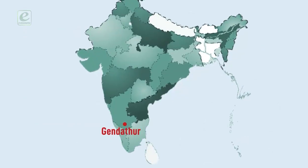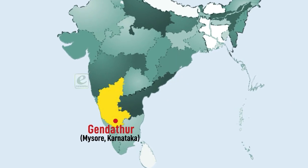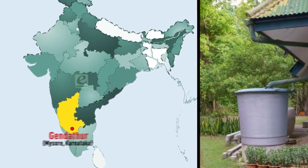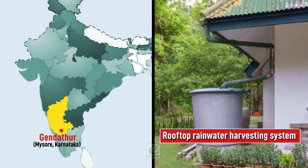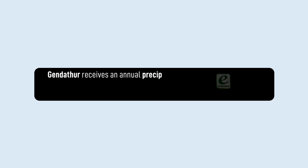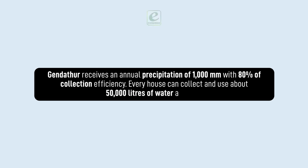In Gendathur, a remote backward village in Mysore, Karnataka, villagers have installed rooftop rainwater harvesting systems in their households. Gendathur receives an annual precipitation of 1000 mm with 80% collection efficiency, meaning every house can collect and use about 50,000 litres of water annually.